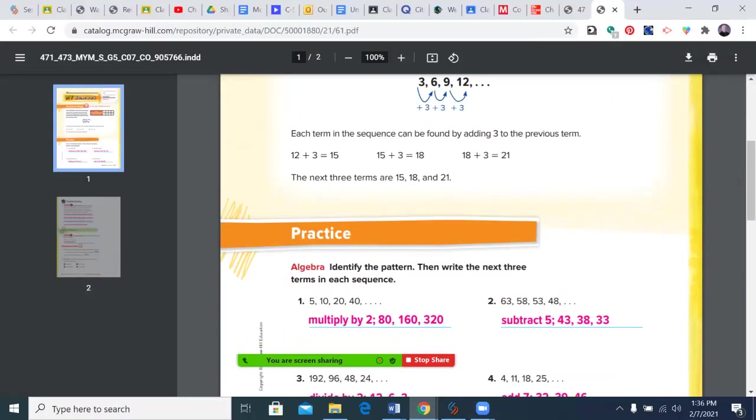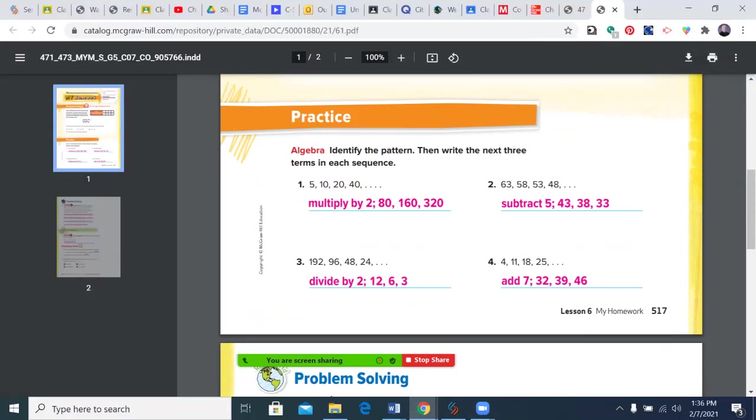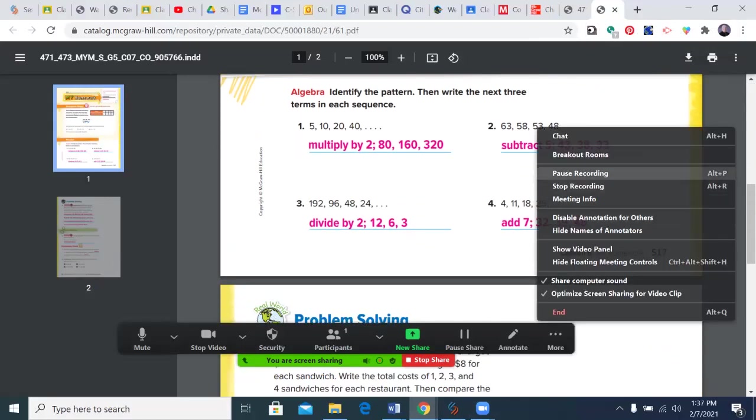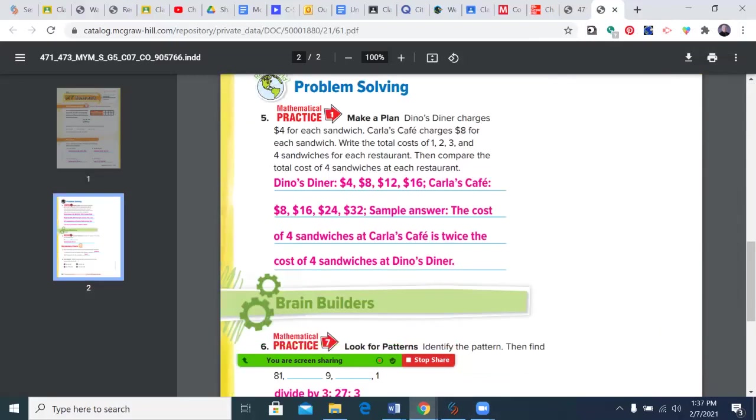Looking at yesterday's assignment, you can see we needed to identify the pattern. This one was multiplying by two, so we just keep doubling it. On number two we subtracted five, so each term was five less. Over here we divided by two, so each term was half as large. And number four, we added seven.